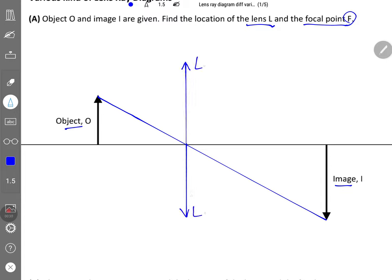The next ray that you need to draw is the ray that is parallel to the principal axis. After passing through the lens, you know that it should pass through F, but that's what you're supposed to find.